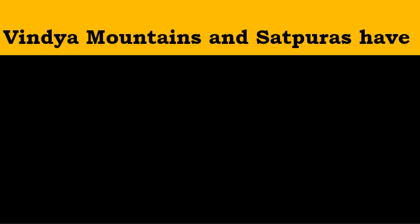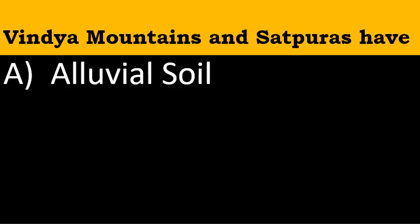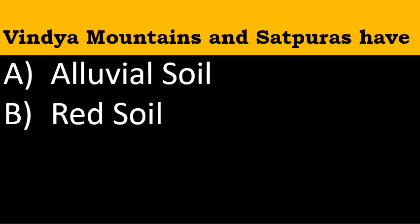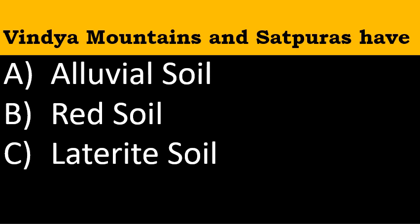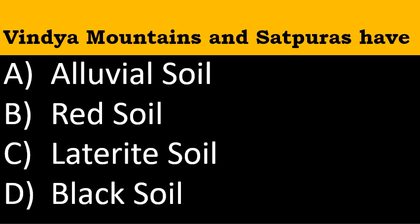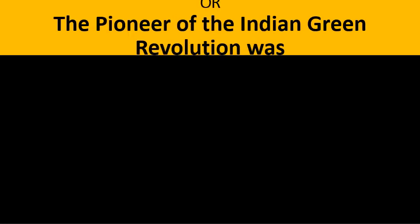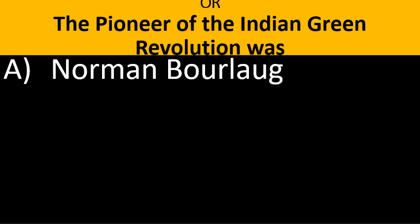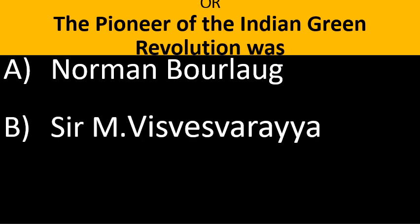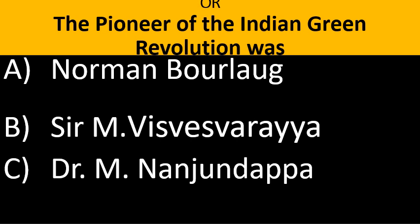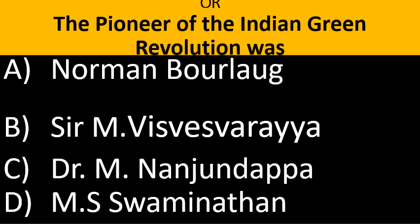Third MCQ: The Vindhya mountains and Satpuras have — (a) alluvial soil, (b) red soil, (c) laterite soil, (d) black soil. Optional fourth MCQ: The pioneer of the Indian Green Revolution was — (a) Norman Borlaug, (b) Sir M. Visvesvaraya, (c) Dr. D.M. Nanjundappa, (d) M.S. Swaminathan.